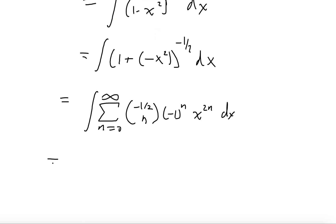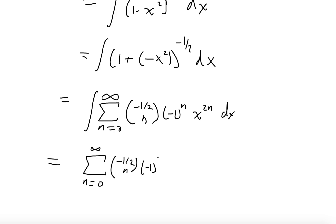Using the linearity of the integral and pulling out the constants (−1/2 choose n) and (minus 1)^n, we get the sum from n equals 0 to infinity of (−1/2 choose n) times (minus 1)^n times x^(2n+1) over (2n+1). You can think of arcsin(x) as the generating function encoding the unusual sequence (minus 1)^n times (−1/2 choose n) over (2n+1).